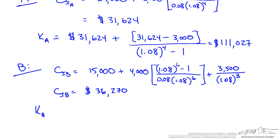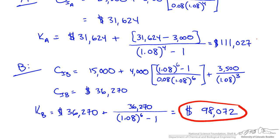The capitalized cost for B is $36,270 plus $36,270. Since there is no salvage value we don't subtract anything. We divide this by 1.08 to the sixth since it is a six year life span and get $98,072. Reactor B has a lower capital cost.